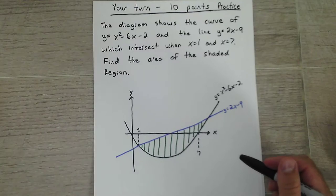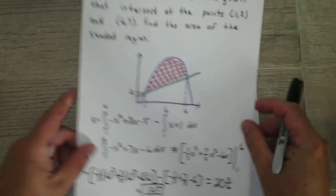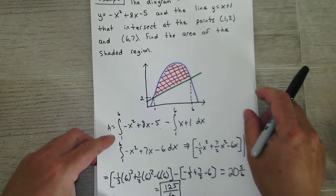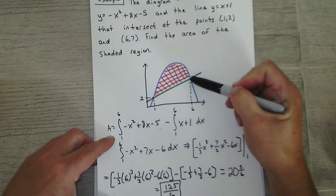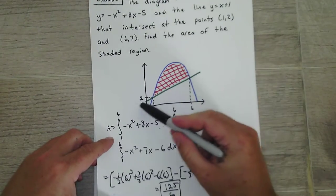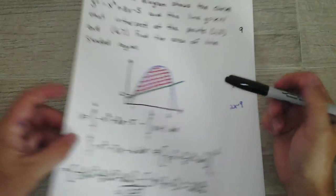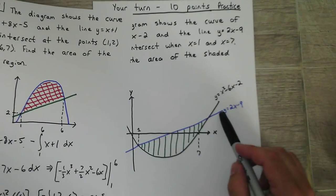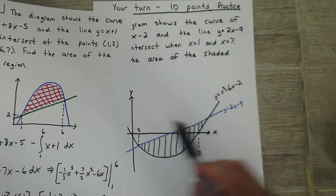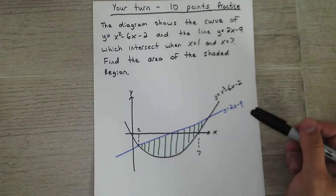So the example that I did yesterday, I did the curve. I integrated the curve minus the integration of the line. Exactly what you had to do but yours was opposite. Notice here your line is on top and the curve is on the bottom. It's just a flip flop version of mine.